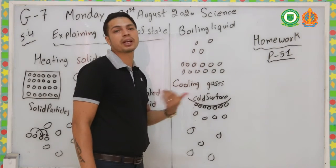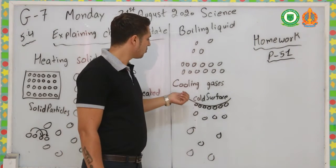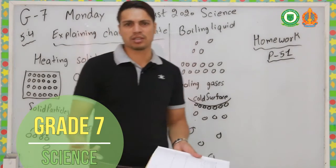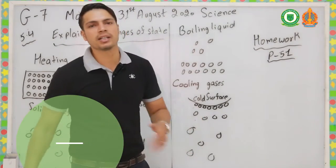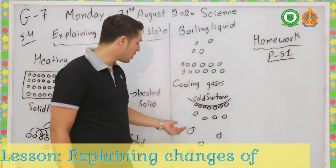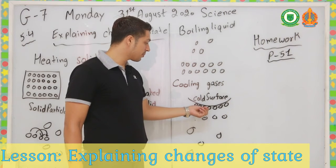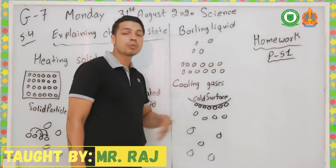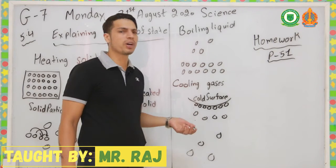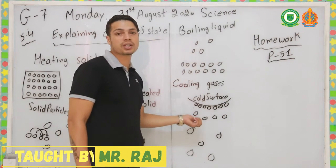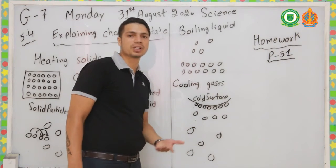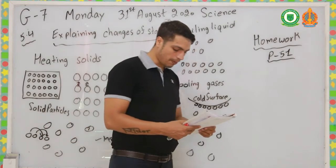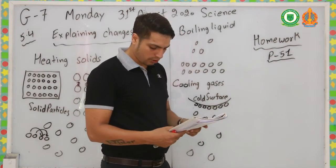For cooling gases: gas particles have no attractive forces and can move freely anywhere. But when they touch a cold surface, they can no longer move fast — they slow down, come close to each other, start to develop a little attractive force, and become liquid.